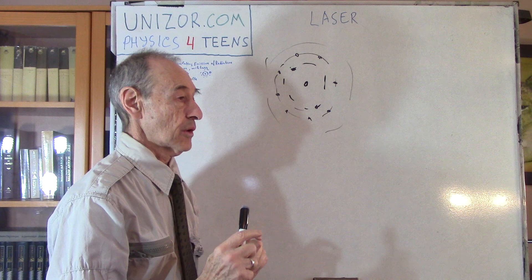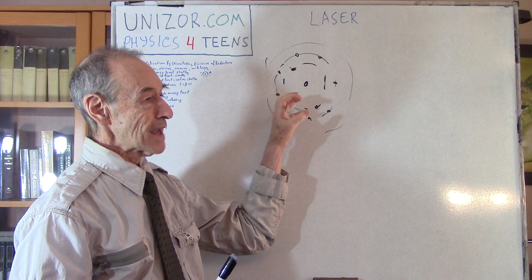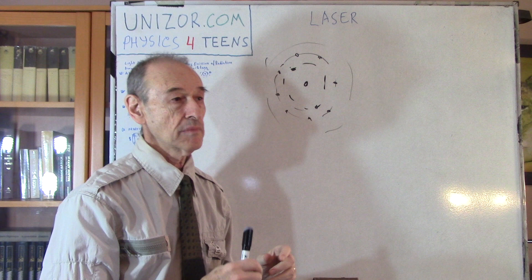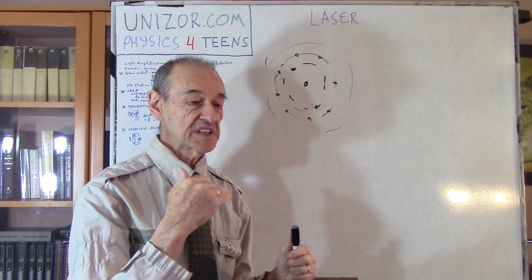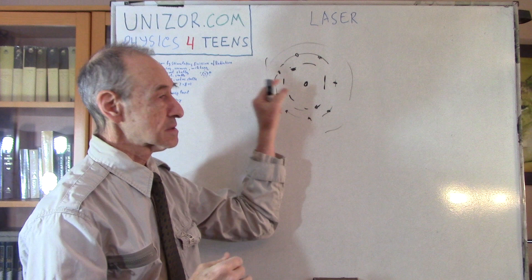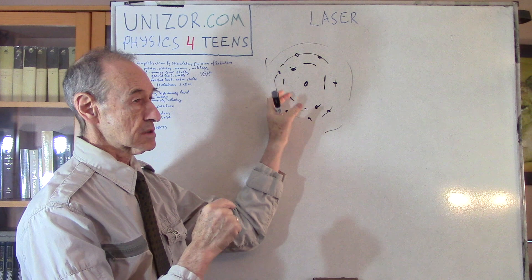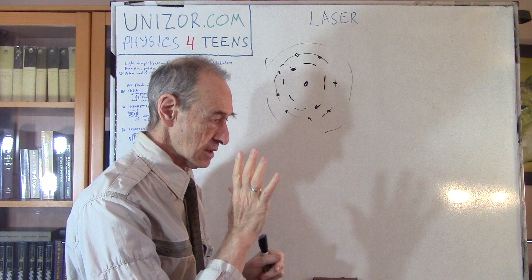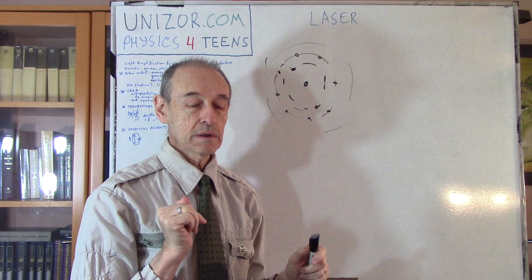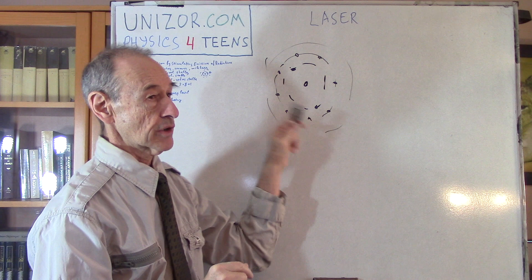For each element, the radii of these shells — which you can consider as concentric spheres, just as a model — cannot take any arbitrary value. There are specific distinct values for every element. So there is an energy level for the first shell around the nucleus, an energy level for the second, the third, etc. Every element has distinct values for energies on every shell.